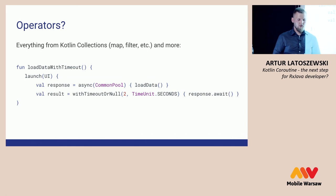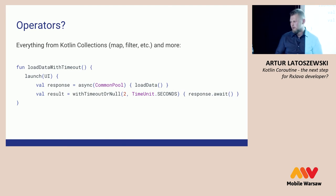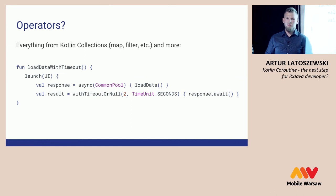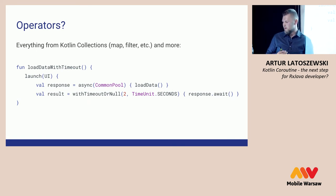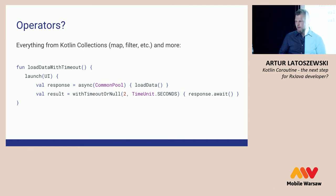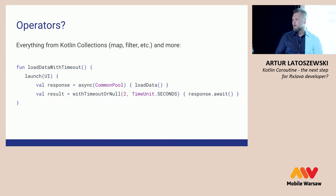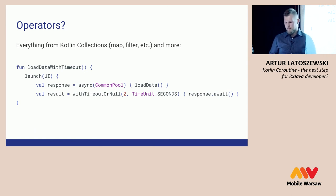Someone might ask about operators — you know, RxJava has a lot of great operators. Here we have everything from Kotlin collections like map and filter. It was in Kotlin before and we use it for working with collections. Kotlin also provides more operators — for example, to handle timeouts we just call withTimeoutOrNull, which takes three parameters: how long to wait, the time unit, and a suspend function block. In this example it will return null after two seconds. There is also a version called withTimeout that throws a TimeoutCancellationException.